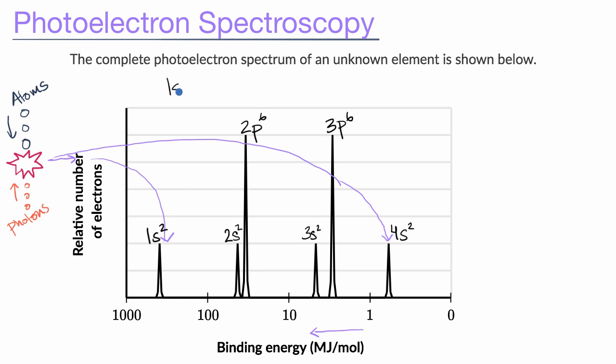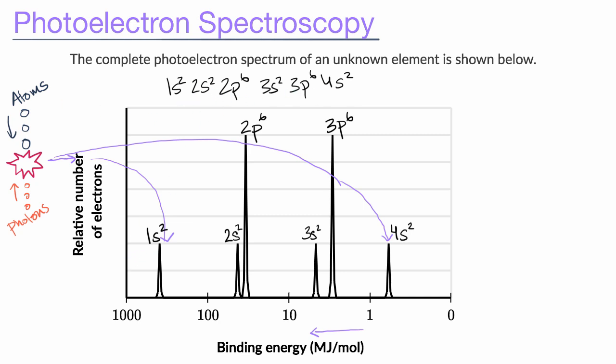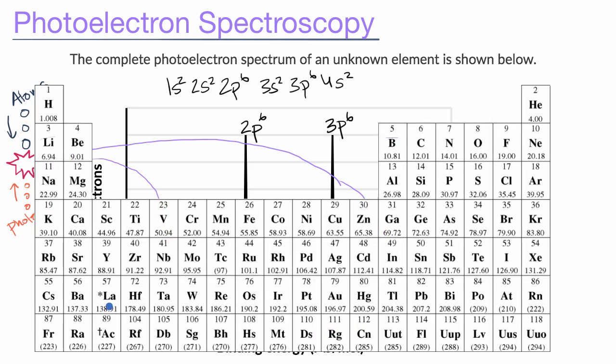Its electron configuration is 1s2, 2s2, 2p6, 3s2, 3p6, 4s2. And what element has this electron configuration? Well, we've worked on it in other videos, but I can get my periodic table of elements out.